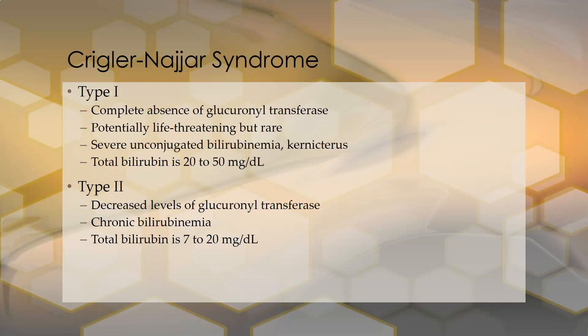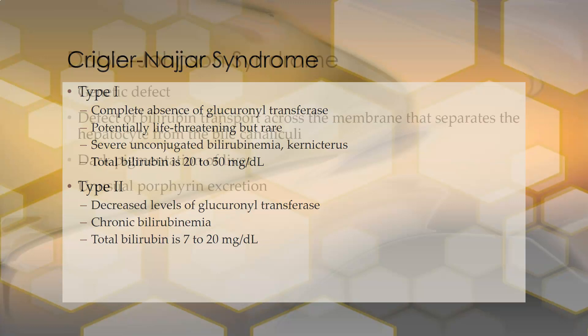Crigler-Najjar syndrome has two types. Type 1 is a complete absence of glucuronosyltransferase, which is needed to make conjugated bilirubin. It is potentially life-threatening but rare, presenting with severe unconjugated bilirubinemia and kernicterus — the accumulation of bilirubin in fatty tissues of the brain causing brain damage — with total bilirubin levels of 20 to 50 milligrams per deciliter. In Type 2, there are decreased levels of glucuronosyltransferase, causing chronic bilirubinemia with total bilirubin levels of 7 to 20 milligrams per deciliter, which is still enough to cause jaundice and complications.